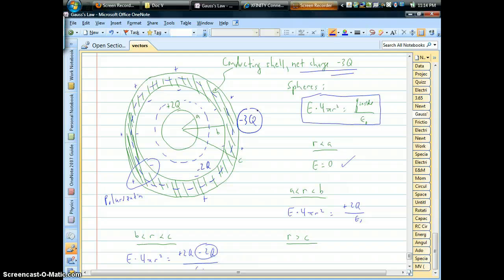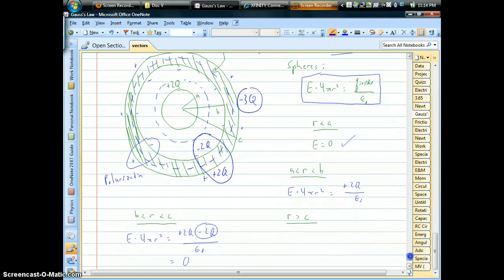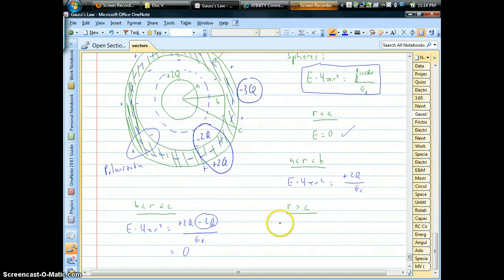So let's see what this means. If you're talking about the outer surface, from polarization, you're going to have a plus 2Q. There's that polarized charge that happened.